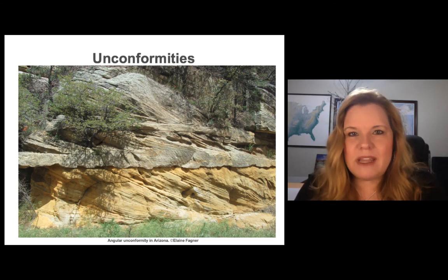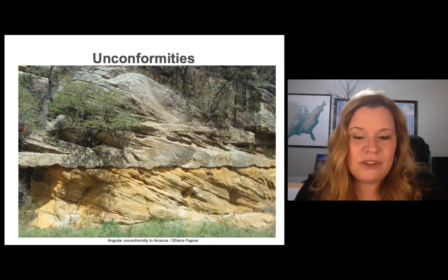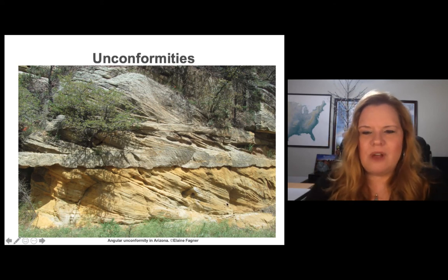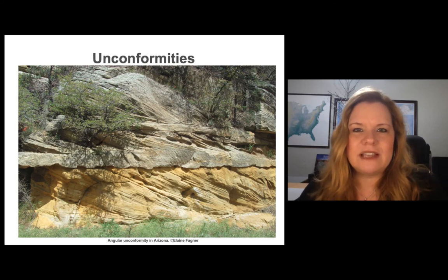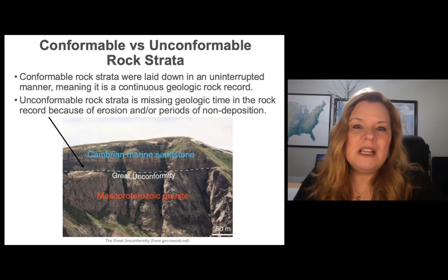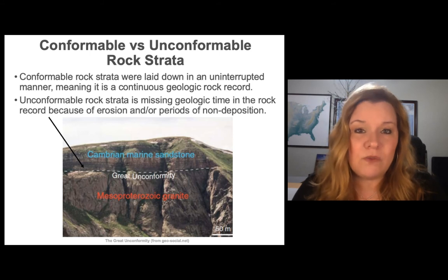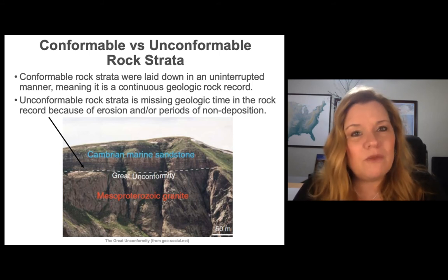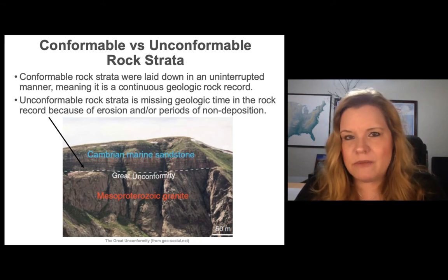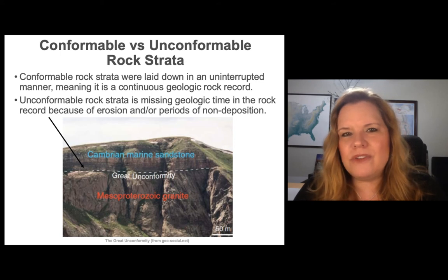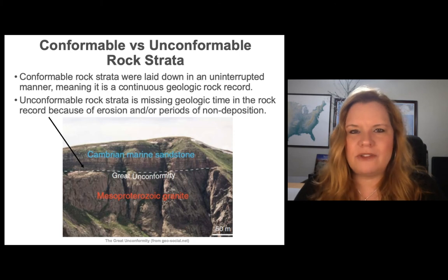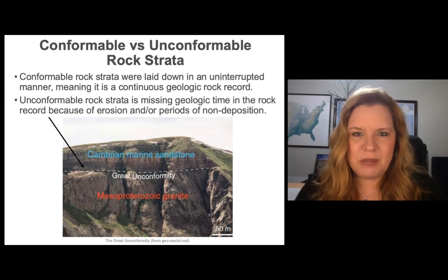That moves us into unconformities. This angular unconformity in the Coconino Sandstone near Sedona, Arizona shows cross-bedded layers that are abruptly cut off with new material put on top. That is good evidence that something happened and we could potentially be missing some geologic time. To start this conversation, we have to talk about conformable versus unconformable rock strata. A conformable rock strata means that layer was laid down in a sequence that's uninterrupted — continuous, with no gaps in time. It's just being deposited in sequence throughout the same geologic period. In other words, it hasn't been weathered or eroded away.